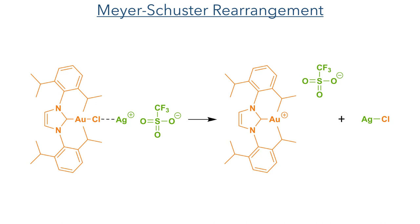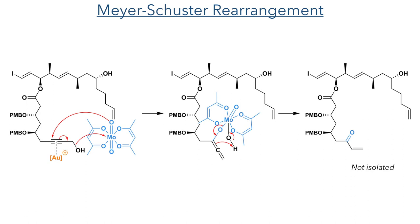IPr·AuCl was reacted with silver triflate, which is a halophilic salt that abstracts the chloride, forming a more reactive cationic gold species. Though this mechanism hasn't been proven, it is proposed that this gold species activates the alkyne while the hydroxyl group attacks a molybdenum oxide-acac complex. This forms a molybdate that attacks the activated alkyne, forming an allene ether. This allene is protonated along with the formation of a carbonyl group and elimination of the molybdenum complex.